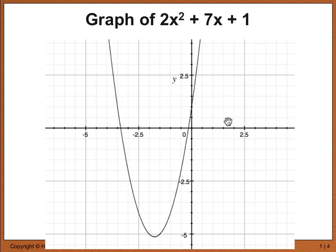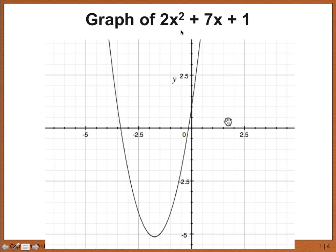Here's the graph of 2x squared plus 7x plus 1. Even though it looks different from f of x equals x squared, it still has the same basic shape as the parent. The whole parabola has been shifted to the left and downward, and its vertex is different. You could complete the square and rearrange 2x squared plus 7x plus 1 into standard form to find h and k and see where the vertex is. But the point is that since the degree is 2, it is still a child of the parent quadratic function, and therefore its shape resembles the shape of the parent.